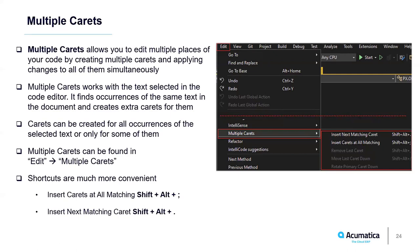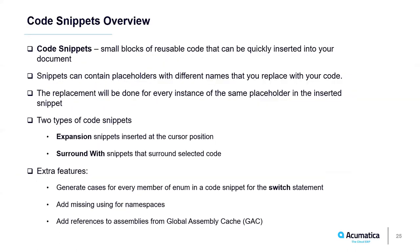The next feature is code snippets. Code snippets are small fragments of reusable code that can be inserted into your document using an IntelliSense suggestion, a command from the context menu, or a keyboard shortcut. They typically contain commonly used code blocks such as try/finally or if/else blocks, but they can insert entire classes or methods. Snippets can contain placeholders with different names that you must replace — the replacement is repeated for every instance of the same placeholder. You can move to the next placeholder by pressing Tab.